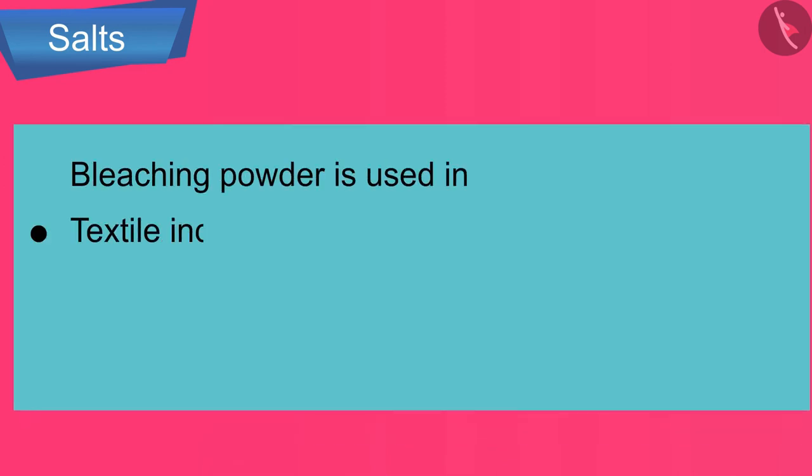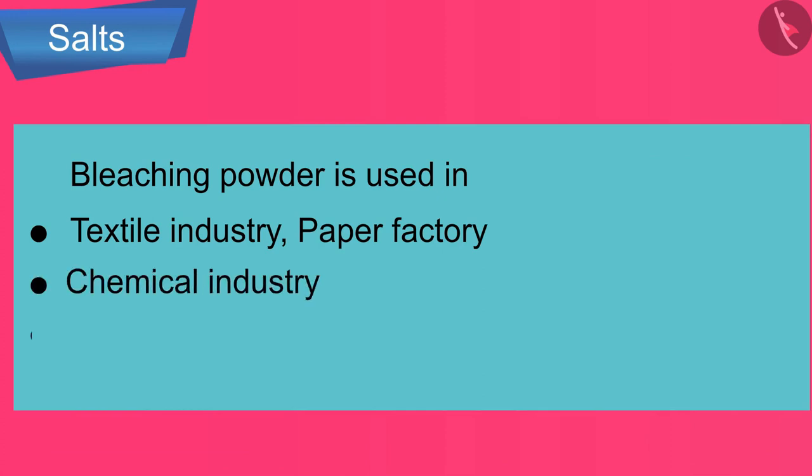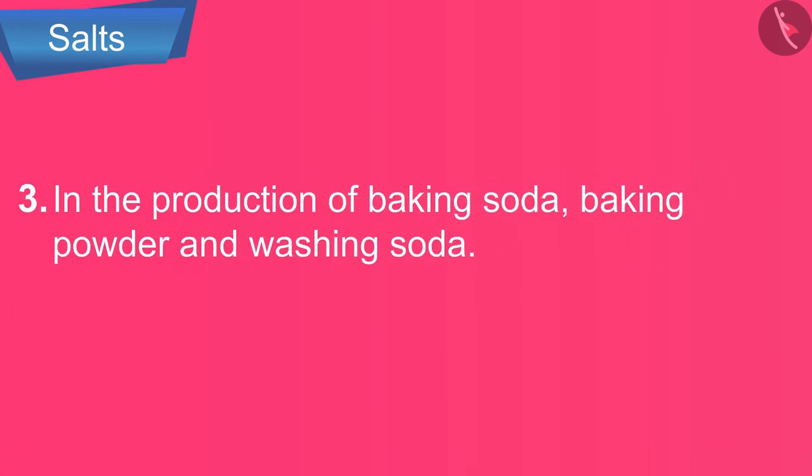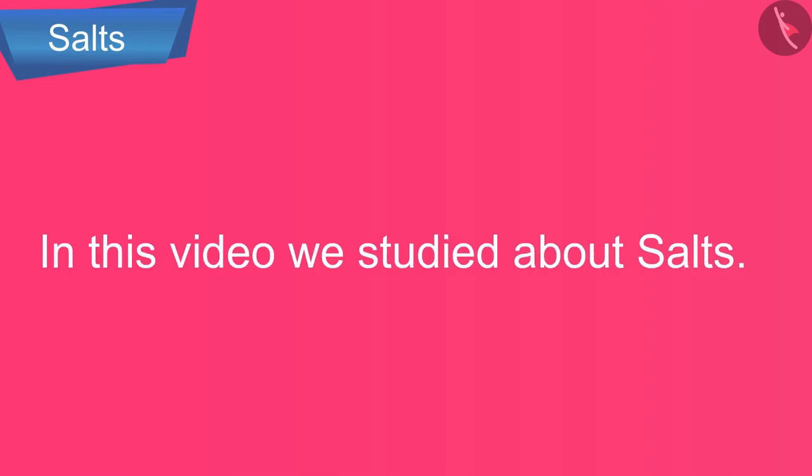Bleaching powder is used in the textile industry, paper factory, chemical industry, and drinking water to get rid of bacteria. Three: in the production of baking soda, baking powder, and washing soda. So friends, in this video we studied about salts.